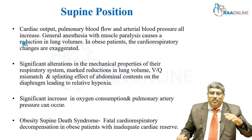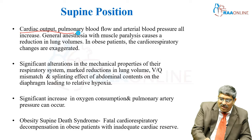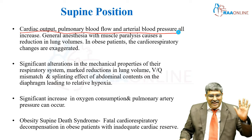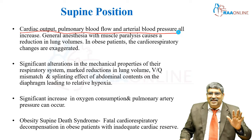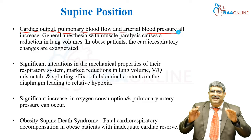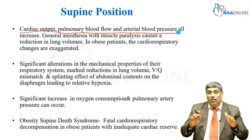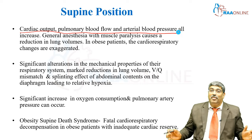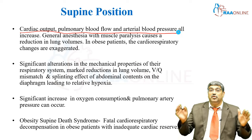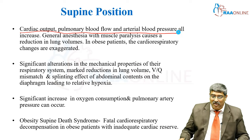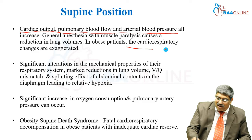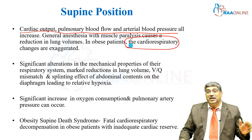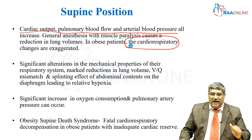By lying supine, cardiac output, pulmonary blood flow, and blood pressure increase. With general anesthesia and muscle paralysis, there is reduction of lung volume. The lung volume is already reduced by obesity, and giving anesthesia and muscle paralysis causes further reduction. So the cardiorespiratory system is going to be affected even more with general anesthesia.